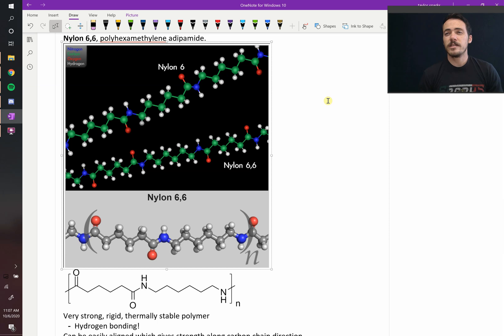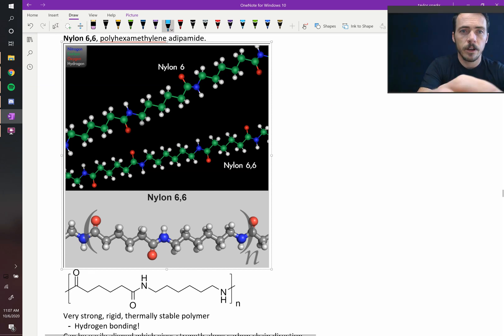All right, let's talk about nylon 6-6. What is nylon 6-6? What do we use it for? So here's the structure. Why do they call it nylon 6-6? It has to do with the number of carbons present. Let's count them together.